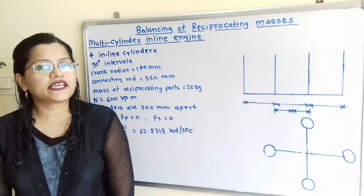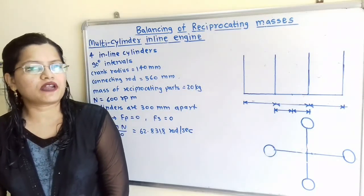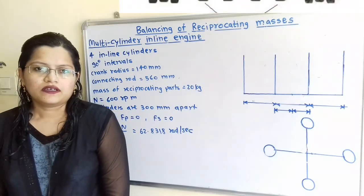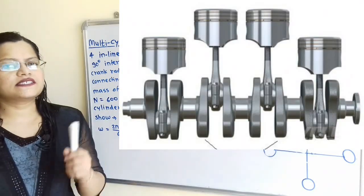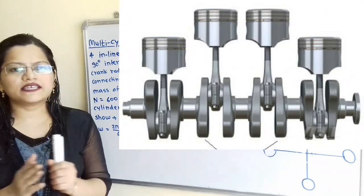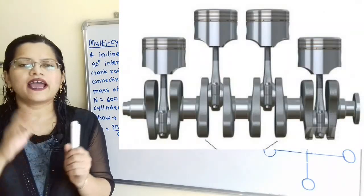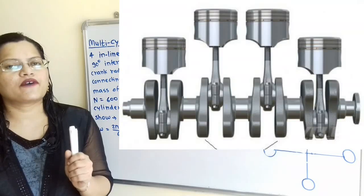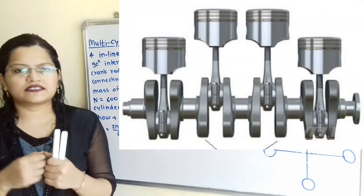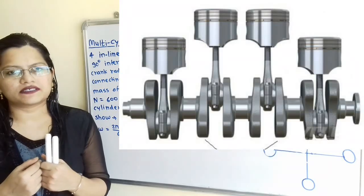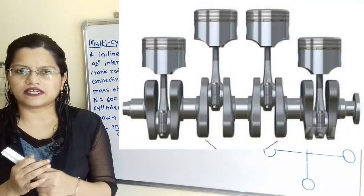Let us understand the given data and draw the diagram for the position of planes as well as angular position. For 4 inline cylinders, the centre lines of cylinders are parallel to each other and all the cylinders are placed in one plane. The masses attached to these cylinders — that is the reciprocating masses or rotating masses — are revolving in different planes for these cylinders.